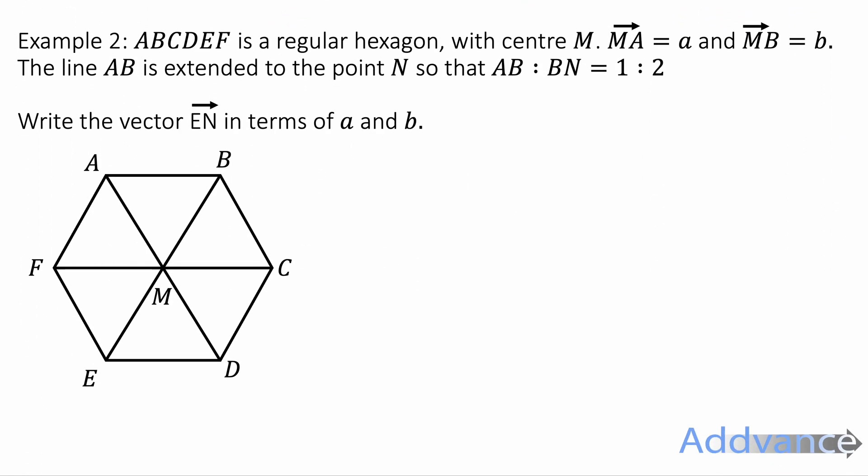Let's look at example 2 now. It says ABCDEF is a regular hexagon with center M. MA is a, MB is b. The line AB is extended to the point N so that AB to BN is 1 to 2. This means that the length BN is twice the length AB. You'll get ratio lengths in vectors quite often. It just means that this length is twice this length. Write the vector EN in terms of a and b.